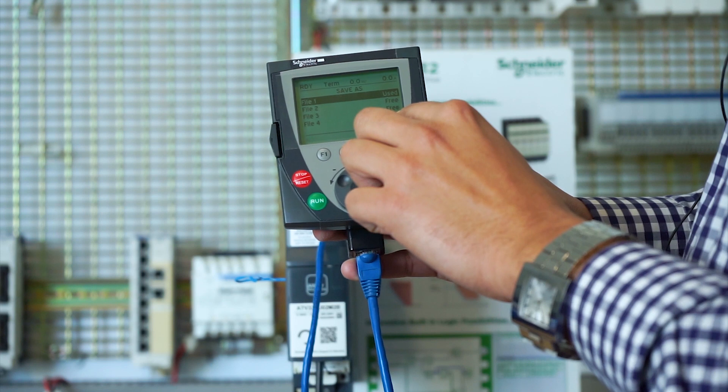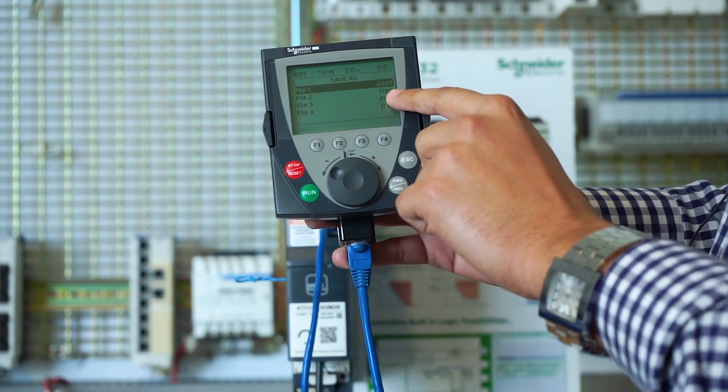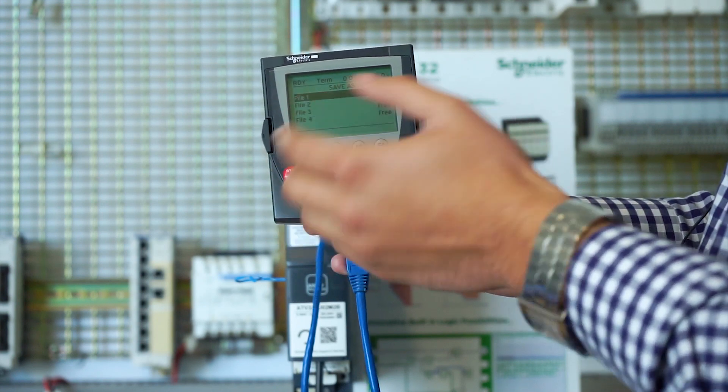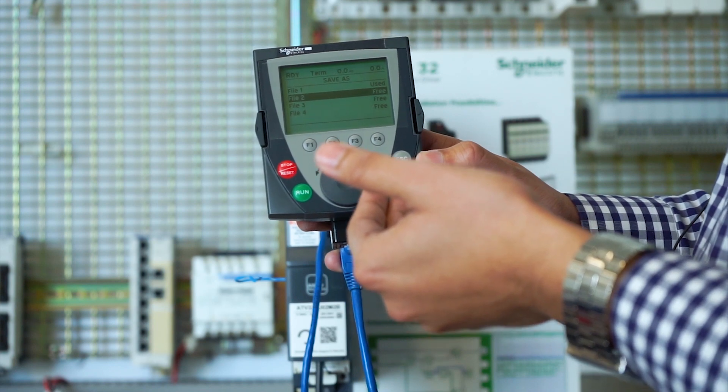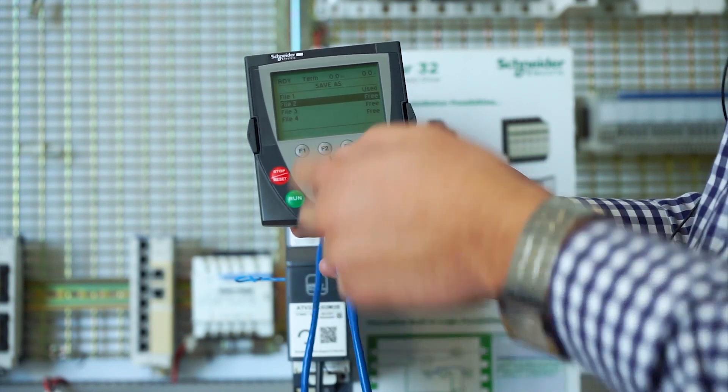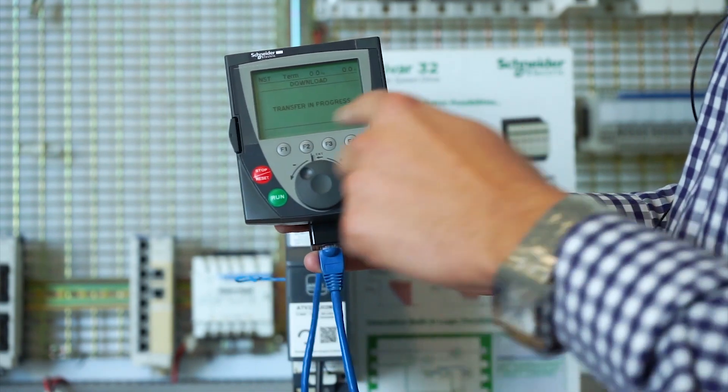We select a file that is free. At the moment, you can see that File 1 is already in use. We can save up to four different files in the HMI, so we can select any free file like File 2.